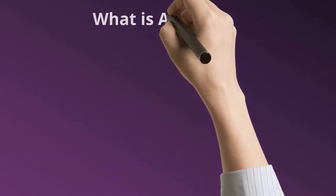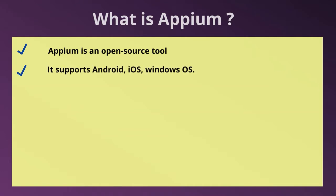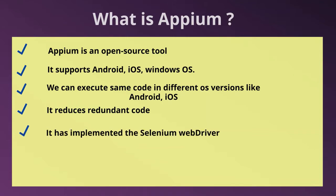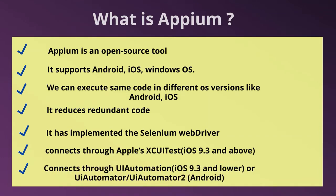Now let's start with our first topic: What is Appium? Appium is an open source tool. It supports Android, iOS, and Windows OS. We can execute the same code in different OS versions like Android and iOS. It reduces redundant code and helps to increase code reusability. It has implemented the Selenium Web Driver, which connects through Apple's XCUITest for iOS 9.3 and above, or UI Automation for iOS 9.3 and lower. It uses UI Automator or UI Automator 2 for Android, or WinApp Driver for Windows.